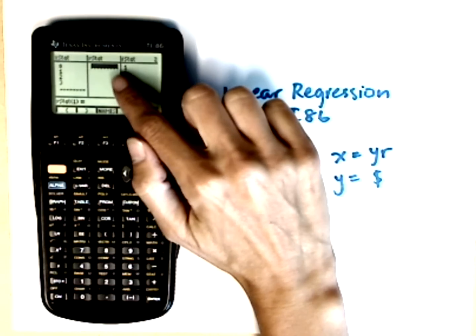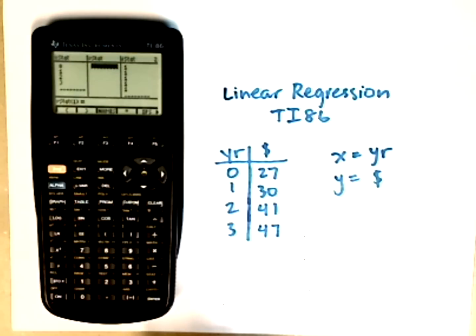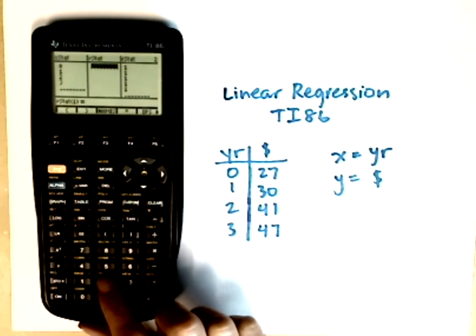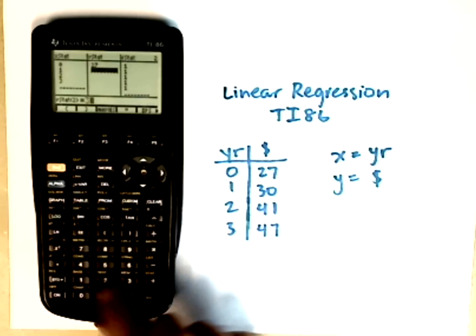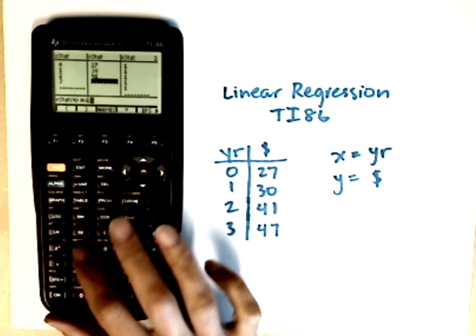Then I'll arrow over. Make sure that you're in the first table value, not at the table name. So I arrow over to the first table value and enter in my dollar amounts. So 27, 30, 41, and 47.